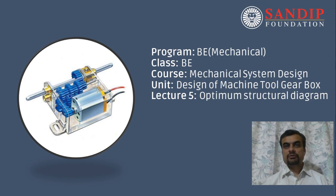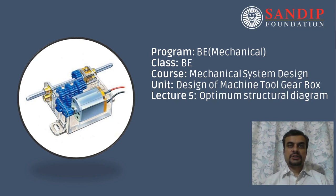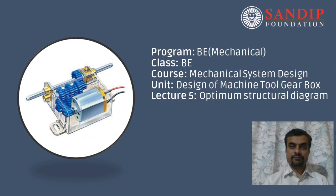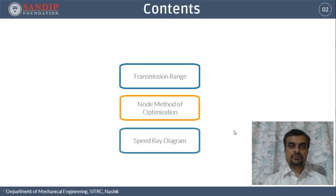In the lecture before that, we learned how to write a structural formula and deduced a total of 18 structural formulae for the gearbox we are designing. For demonstration purposes, we drew structural diagrams for three of those formulae. In this lecture we will learn how to decide the best possible structural diagram, by calculating transmission range, applying the node method of optimization, and finally drawing the speed ray diagram.